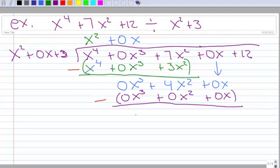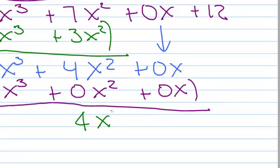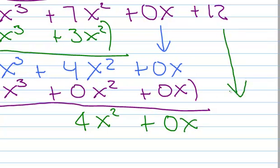So, the x cubed terms have disappeared. 4 minus 0, well, that's 4 x squared. 0 minus 0, so plus 0x. And then bring down your plus 12. Plus 12. All right.